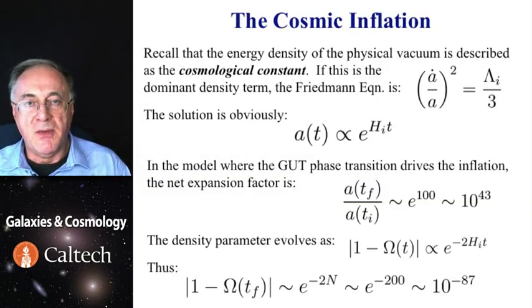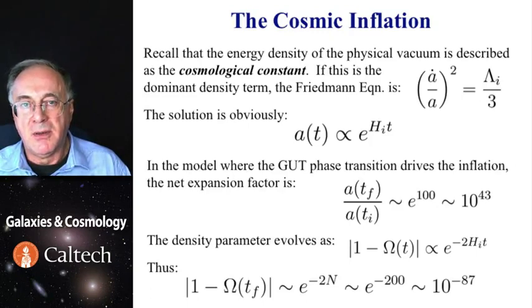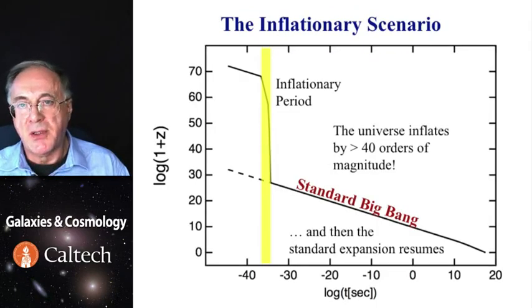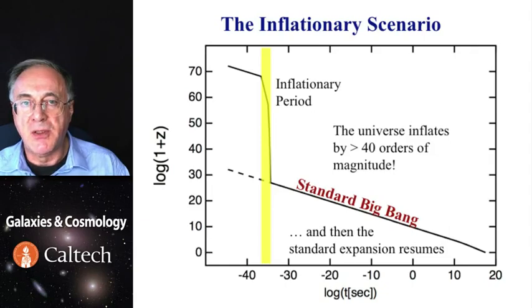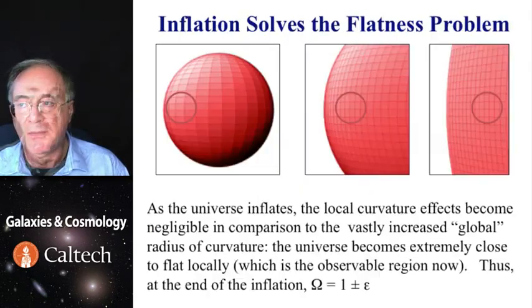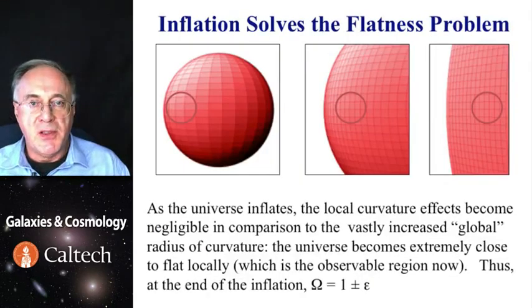And since the deviation of the density parameter from unity also goes exponentially, that means it was incredibly finely tuned to be close to unity to begin with. So here is a schematic expansion diagram. What's plotted is 1 plus redshift, rather than 1 over that quantity, which would be the scale factor. So there is a rapid initial expansion, and then universe enters into a traditional Friedman-Lemaitre phase.